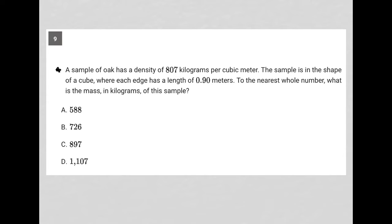This question says a sample of oak has a density of 807 kilograms per cubic meter. I'm going to write that down: 807 kg per cubic meter, which means meters cubed. This is the density, so d equals that.